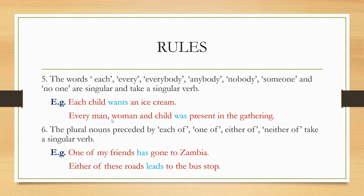'Every man, woman and child was present in the gathering.' Even though three nouns — man, woman, and child — are used, the word 'every' indicates I am counting one at a time. So I have to consider this as a singular subject, and therefore I use the singular verb 'was'.